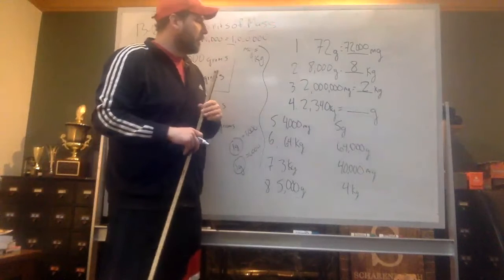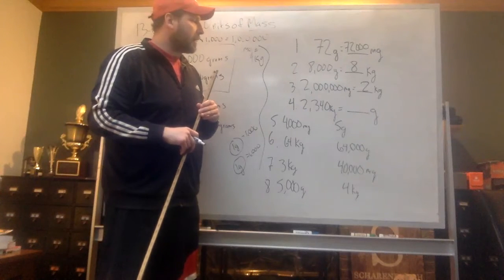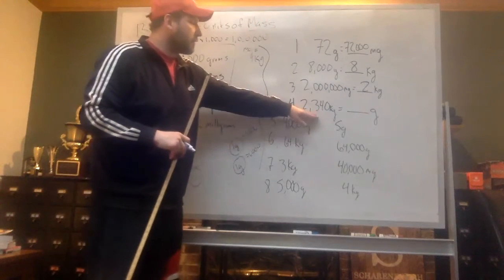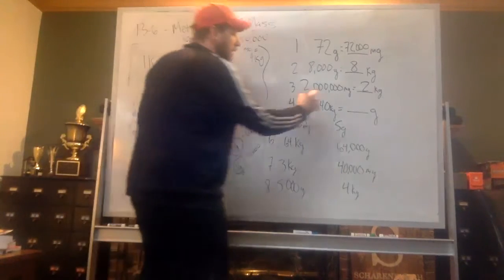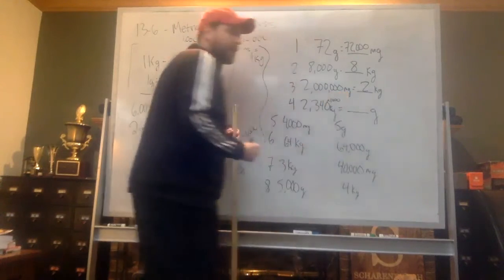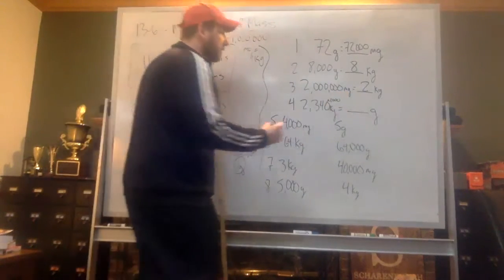Now, we have 2,340 kilograms is how many grams. Well, you take that 2,340 kilograms, you have to times it by 1,000. And we know that any time you times something by 1,000 or a 10 or a 100, you just add those zeros.